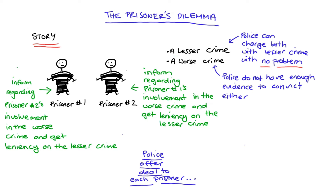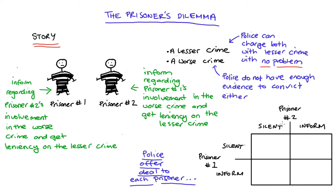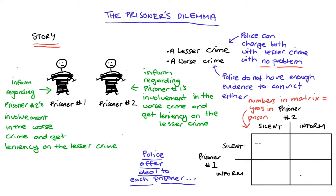That's the situation, and our textbooks or courses will present a matrix with numbers inside representing the number of years in prison for each prisoner associated with each possible outcome. We have four possible outcomes. The top left-hand cell is when both prisoner one and prisoner two stay silent — neither makes a deal with the police. In this case they're both charged for the lesser crime but neither for the worst crime. I'll put two years each here. When I write down the years in prison in the matrix, I'll put prisoner one's outcome first and then prisoner two's.